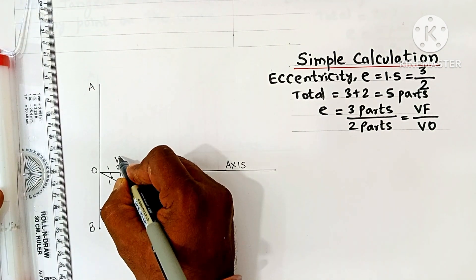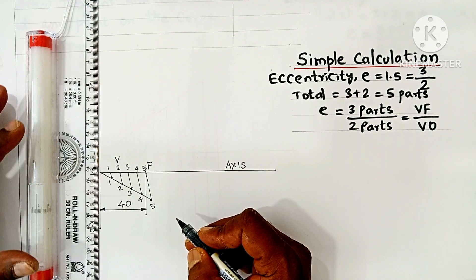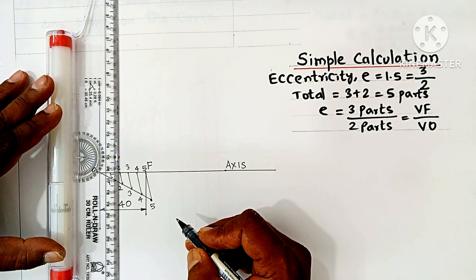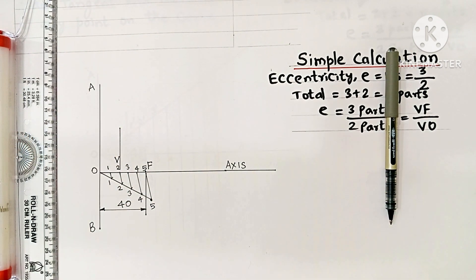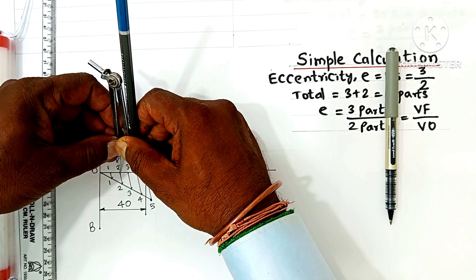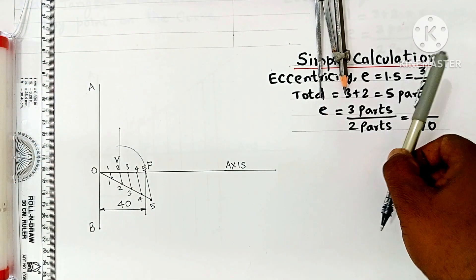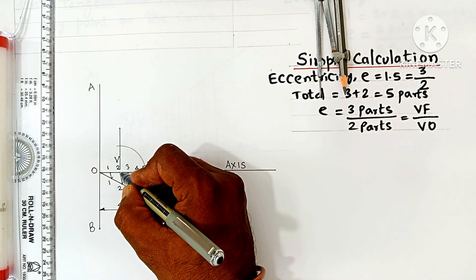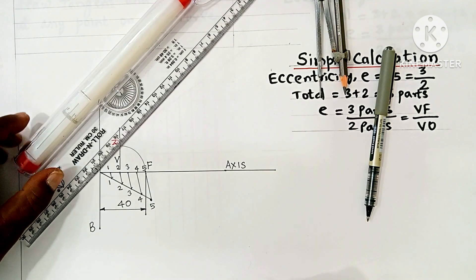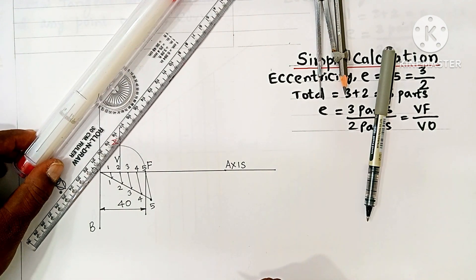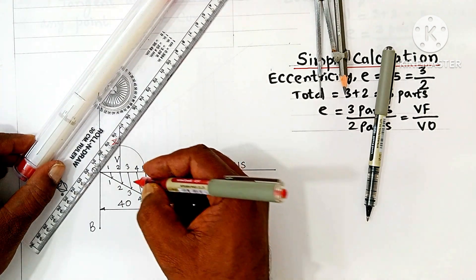At point V, draw one vertical line parallel to the directrix. Keep the edge of your scale over the directrix and move it to point V to draw this vertical line. Take your compass with V as center and VF as radius, and draw an arc upward. Where this arc intersects the vertical line through V, mark that point as Z. Join O and Z and extend the line further.